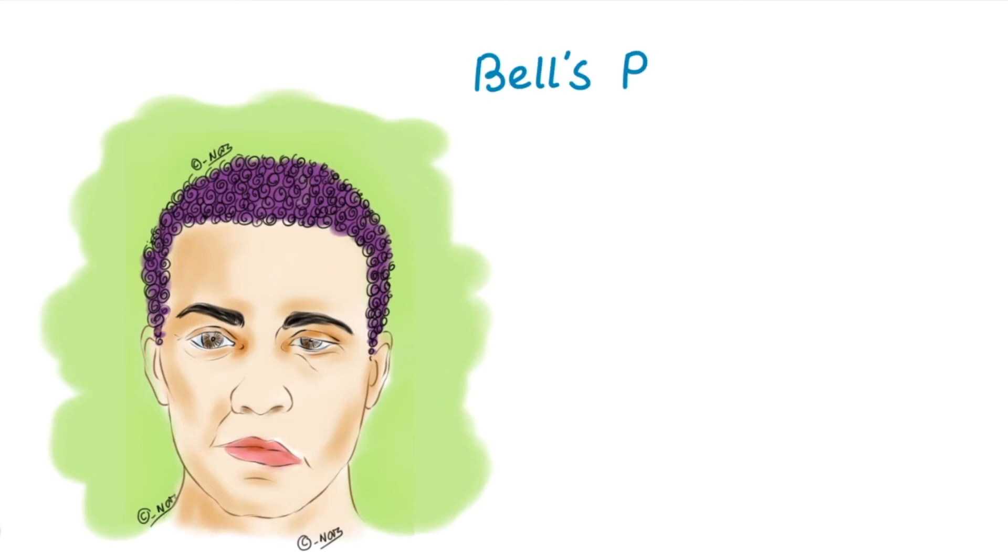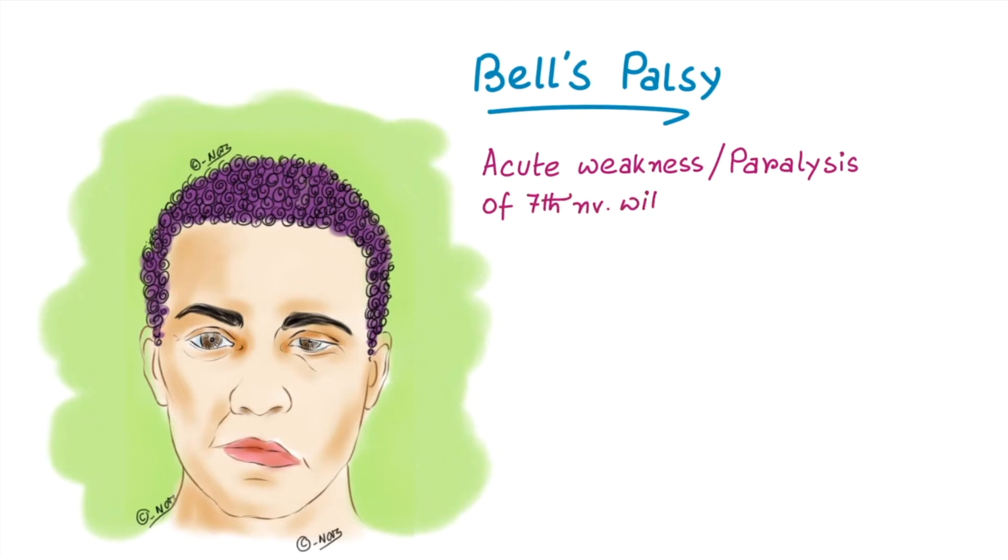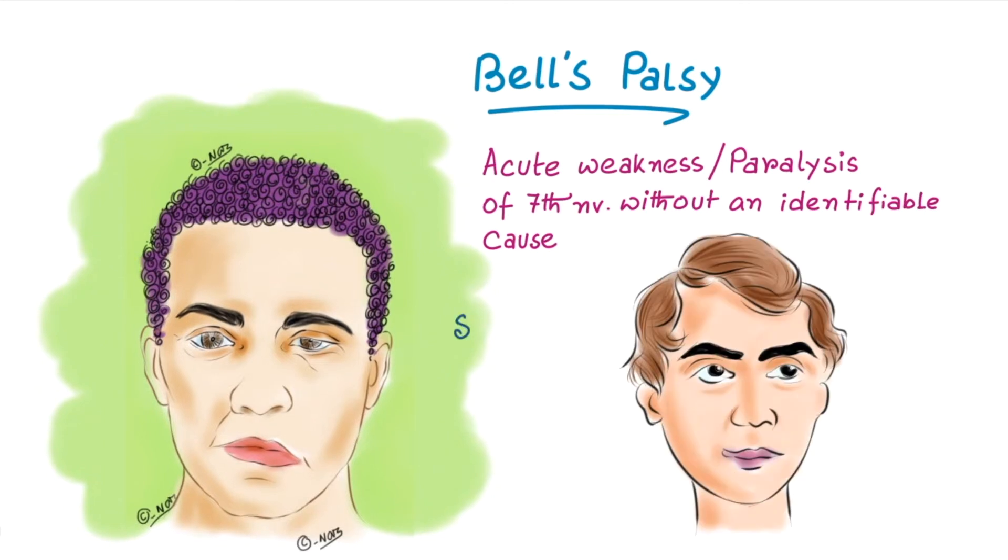Today we will discuss Bell's palsy. Bell's palsy is an acute weakness or paralysis of facial nerve without an identifiable cause. It was first described by British anatomical scientist Sir Charles Bell. That's why it is called Bell's palsy.